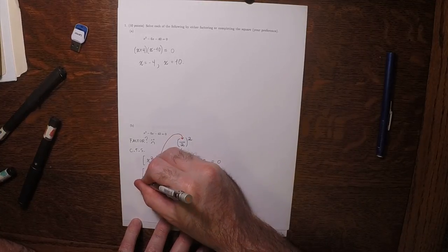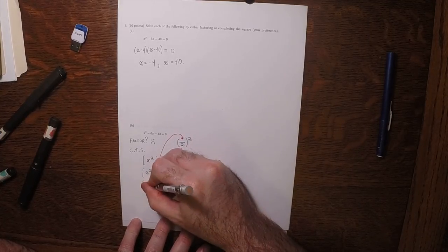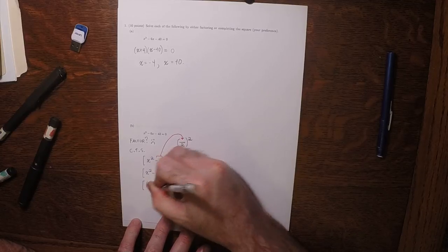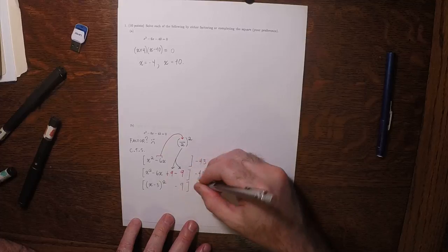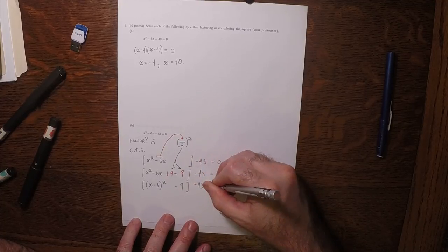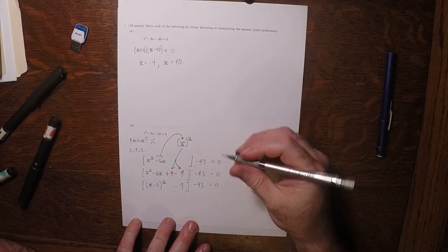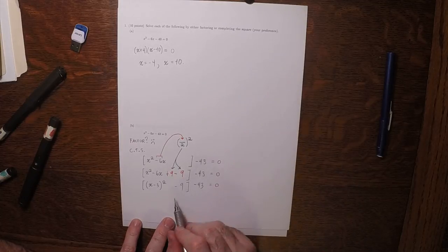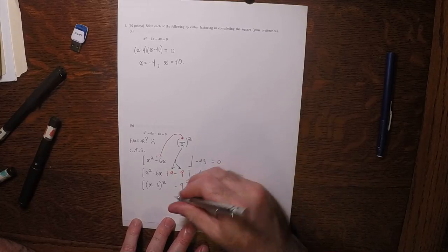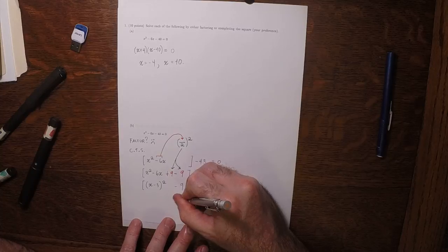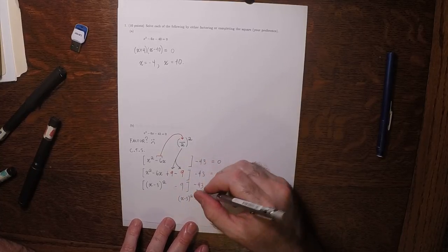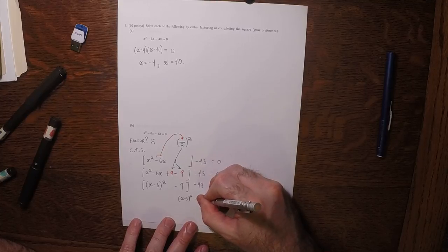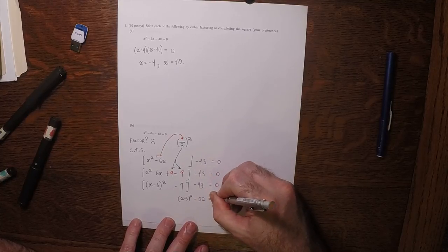So now the first three terms can be written as a square: (x - 3) squared, and then minus 9, minus 43, equal to 0. So then we can collect the constants together, (x - 3) squared, and then minus 52, equal to 0.